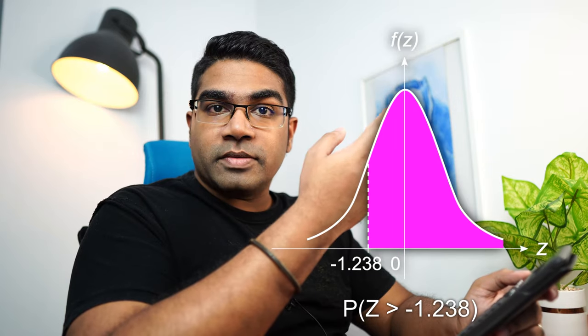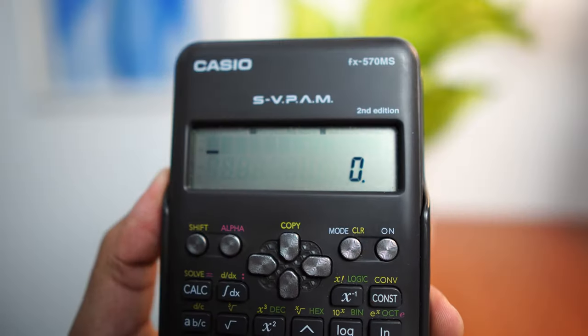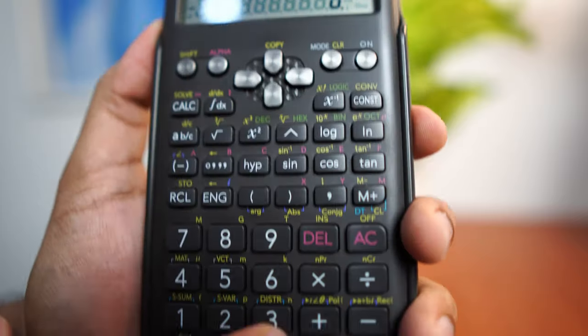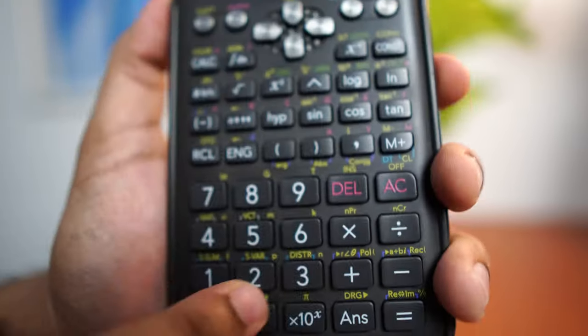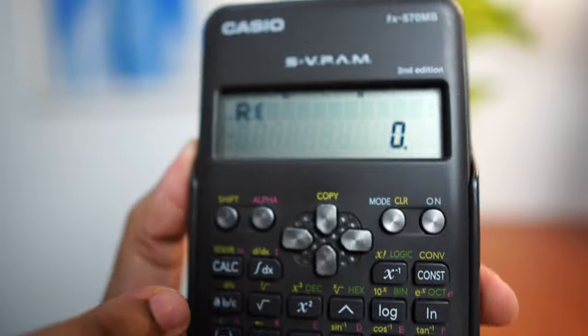If we wanted to find the probability of Z being more than negative 1.238, same thing again. This time, we go to shift, 3, go to R because it is the right-hand side.